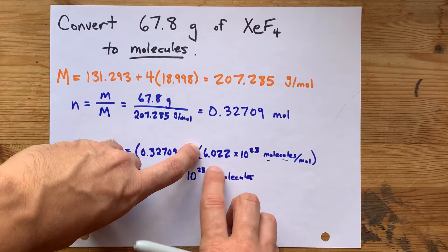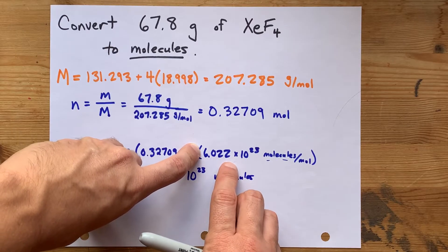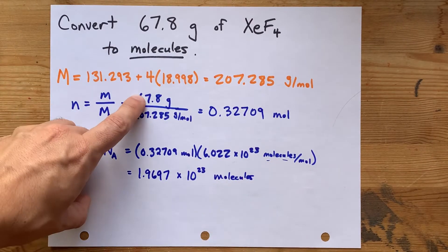This number, Avogadro's number, rounded the way that I had it, is one, two, three, four significant figures. The fewest of all of those is three.